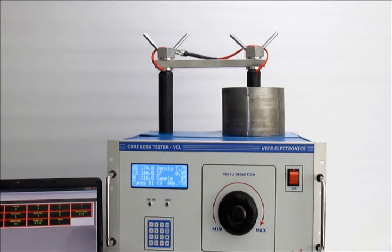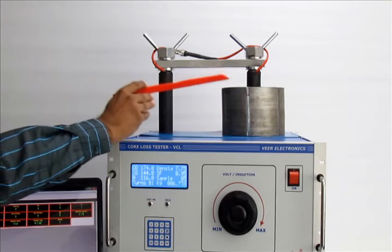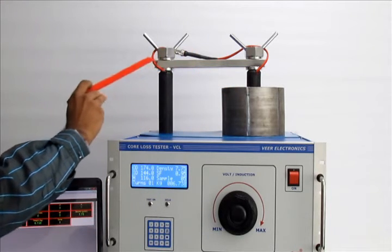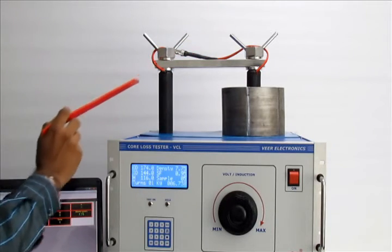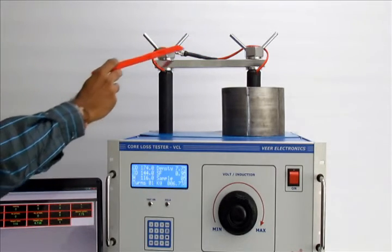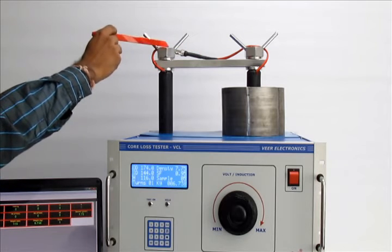Now put the stator core in this testing jig and fit these two nuts properly. Now connect both terminals of red wire properly.